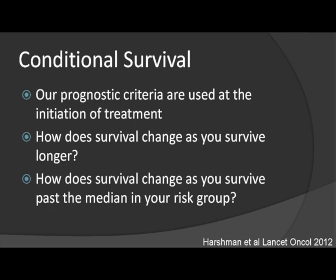Prognosis is not static — it is actually a dynamic process. If we tell a patient their median overall survival is predicted to be 27 or 44 months, what happens if they live beyond that? What if they come back 36 or 56 months later? This shows that prognosis changes as we gain more information. This is the concept of conditional survival: how does survival change for each individual patient as they survive longer, especially for those who survive past the median in their risk group?